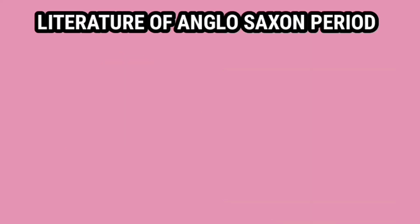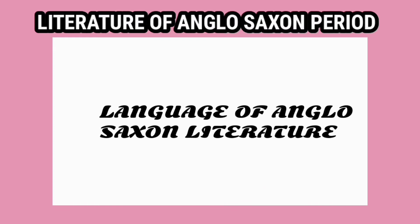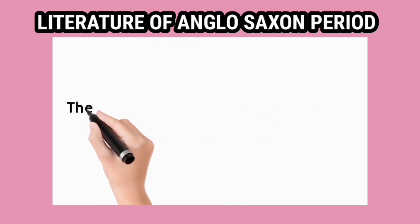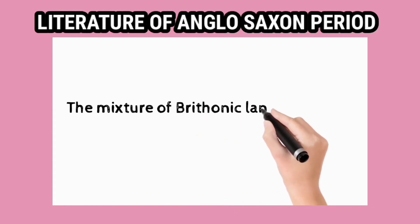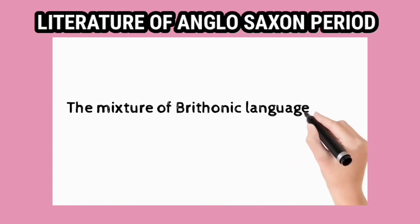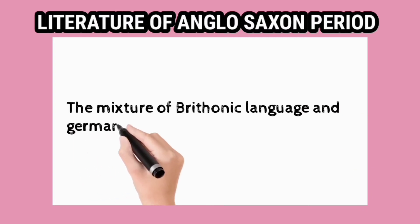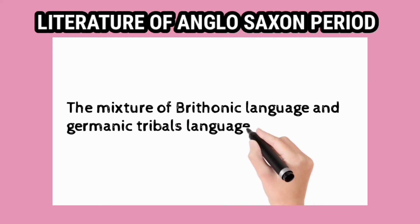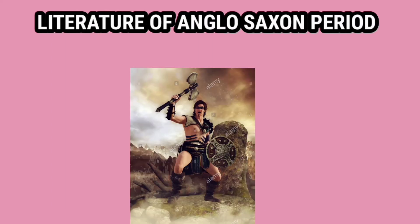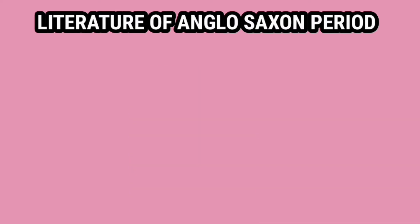Anglo-Saxon دور میں جو زبان استعمال ہوتی تھی وہ Celtic اور Germanic language کا mixture تھی — یہی Old English Literature کہلاتی ہے۔ ہر دور میں کوئی نہ کوئی genre dominate کرتا ہے — Anglo-Saxon period میں dominating genre poetry تھی۔